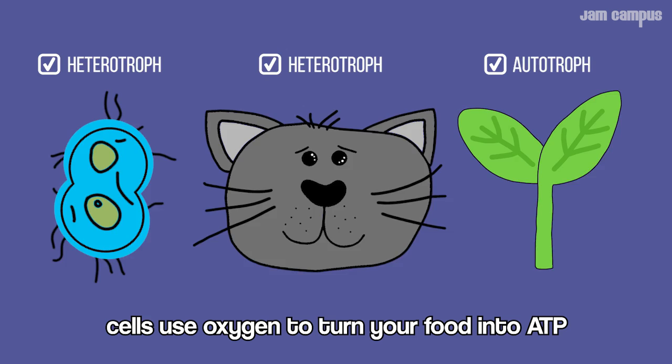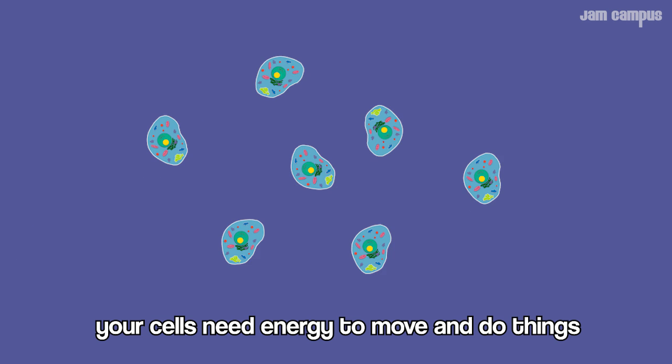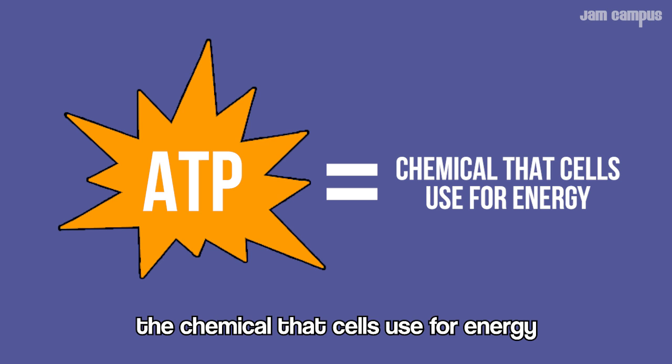Processing bacteria, animals, and plants — in both the autotrophic and the heterotrophic. Cells use oxygen to turn food into ATP. Your cells need energy to move and do things, so they use the foods you eat to make ATP, the chemical the cells use for energy.